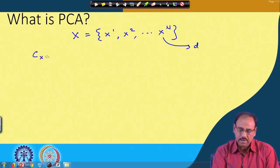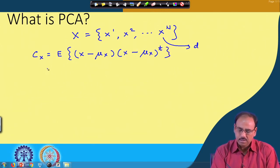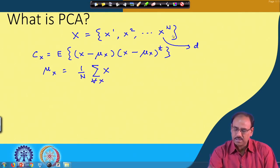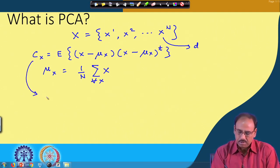The covariance matrix Cx is given by: Cx equals the expectation value of (x minus mu_x) times (x minus mu_x) transpose, where mu_x is the mean of the input vector. The mean mu_x equals the sum of x over all x in the vector set. Once you form this covariance matrix Cx, you compute the eigenvectors and eigenvalues from it.